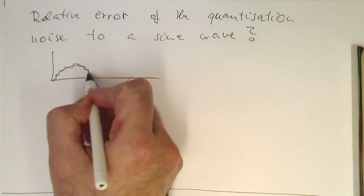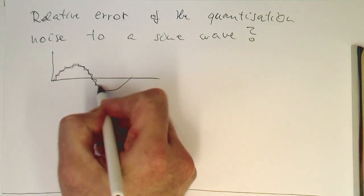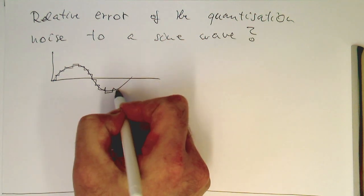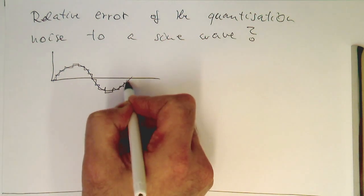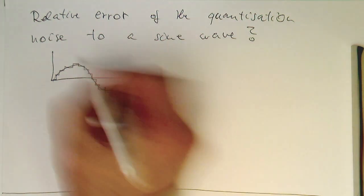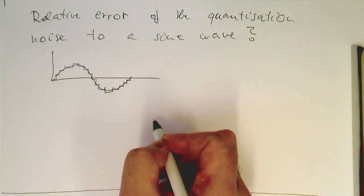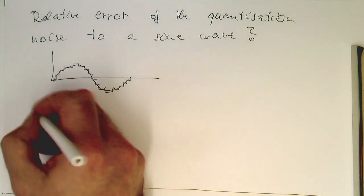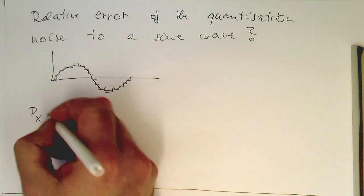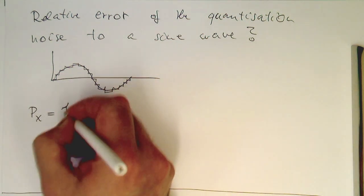Imagine we have our analog sine wave here, and then the quantization would generate something like that. We are introducing obviously errors here in this process. We have errors due to these steps.